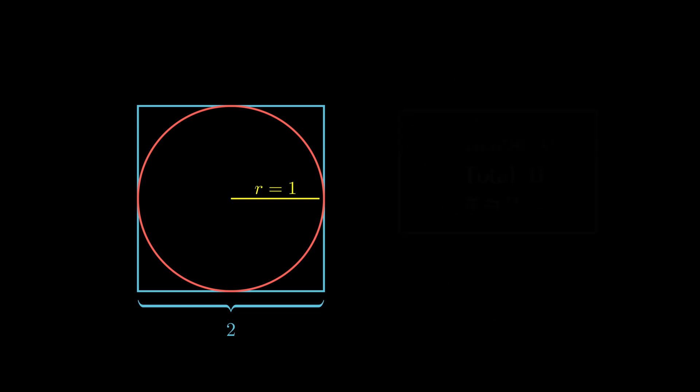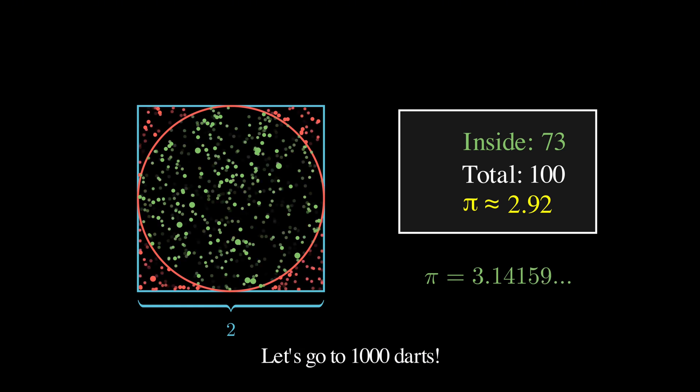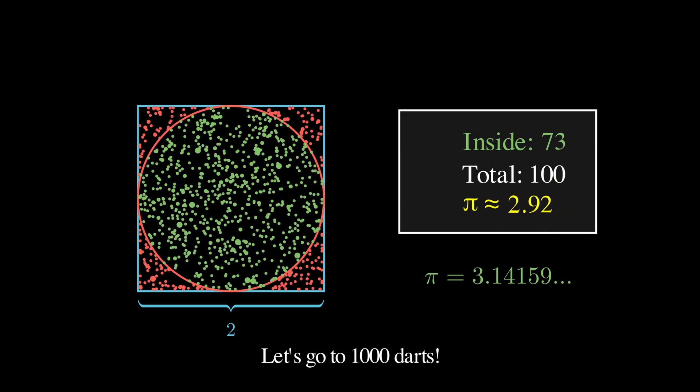Now, let's start the simulation. After just 10 throws, our estimate would usually be pretty far off, but as we throw more and more darts, something remarkable happens. With 100 darts, we're getting closer, probably within an error range between 0.1 and 0.2. And with 1000 darts, we might be at 3.14, incredibly close to the true value of pi. This convergence isn't luck or magic.